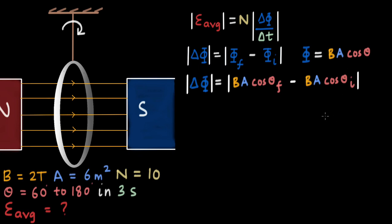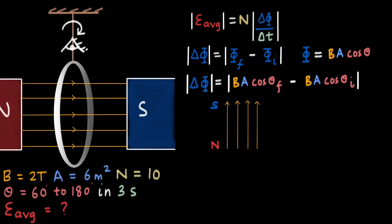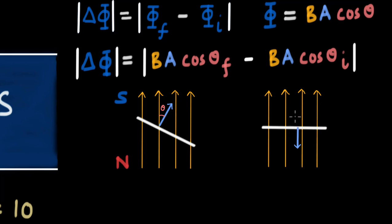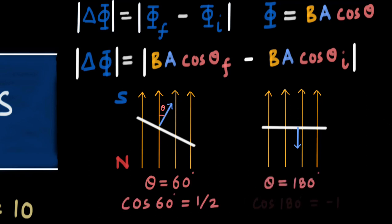To understand the angles, let's look at the coil from above. The magnetic field lines go from north to south. Initially, the angle between the area vector and the field is 60 degrees, so the coil is oriented at 60 degrees to the field. After rotating, the final angle is 180 degrees, meaning the area vector is directly opposite to the magnetic field vector.